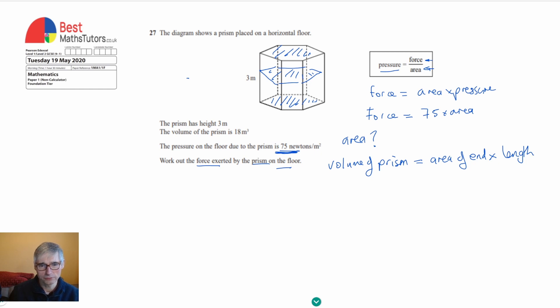If I take this formula, volume of prism equals area of end times length, and divide both sides by length, the area equals the volume divided by the length. Putting those values in: the volume is 18 and the height, which is the same as the length, is 3. So the area, 18 divided by 3, is 6 meters squared.